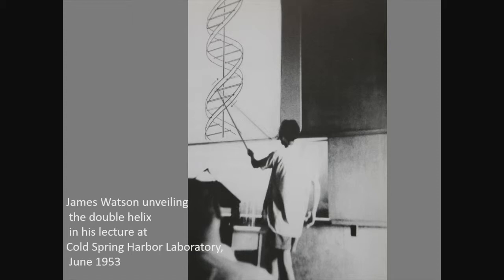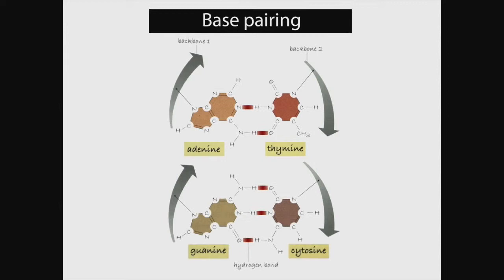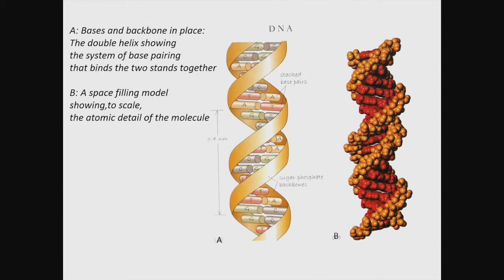I am going to describe some evidence that is important for understanding what epigenetic marks are. As you know, DNA is a long linear molecule formed by two strands which form a double helix, joined by the pairing of four bases: adenine and thymine, and guanine and cytosine. This diagram shows the bases and the backbone in place, illustrating the double helix and the system of base pairing that binds the two strands.